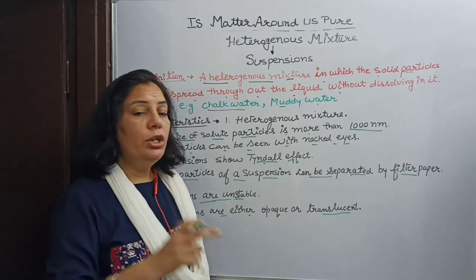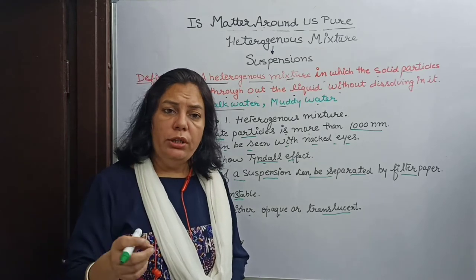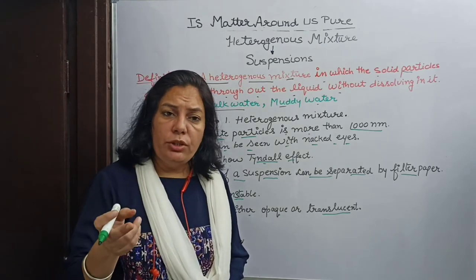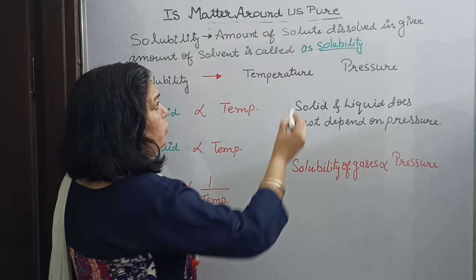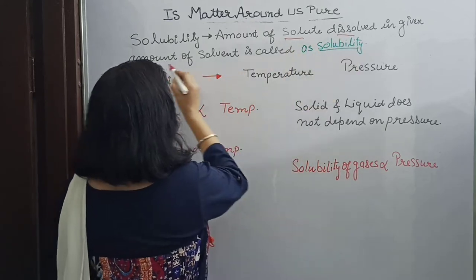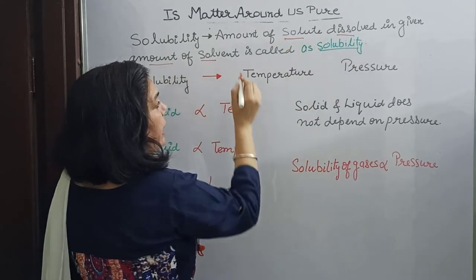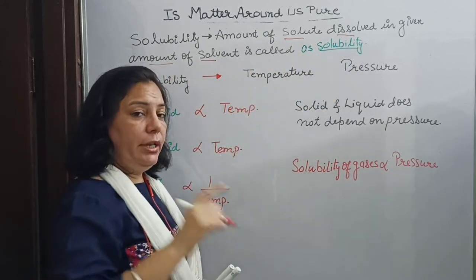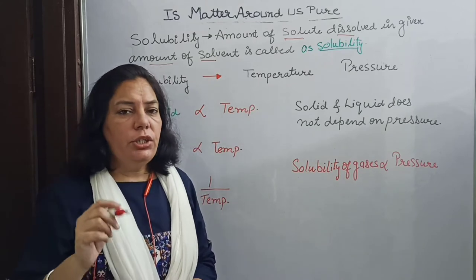Examples of suspensions are chalk water, muddy water, and soil plus water. Now, the amount of solute dissolved in a given amount of solvent at a given temperature is called solubility.